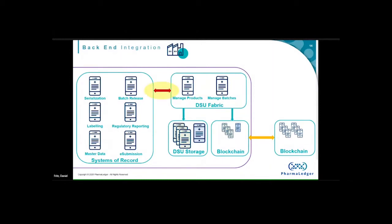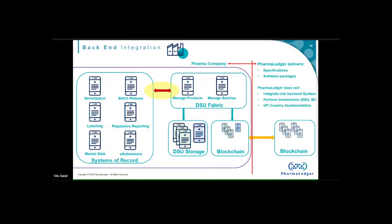One of the important things is what we call the backend integration — getting from our systems of record to the DSU fabric. That's critical because we produce many hundreds of thousands of batches and millions of serial numbers; you can't manage this manually. Automated systems must ensure data is present, checked, and correct. When we release batches to the market, everything must be verified — similar to how we currently handle the EU FMD. You may wonder why not use a central database for the leaflet — but we have many different registration procedures, and we may need batch-specific leaflets, which a centralized location cannot provide.